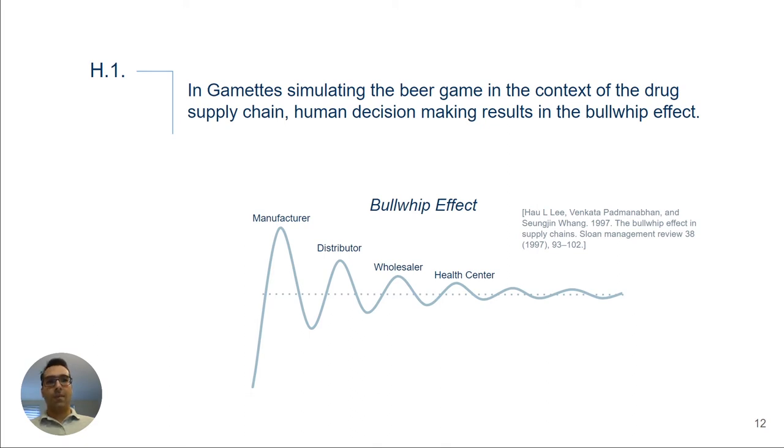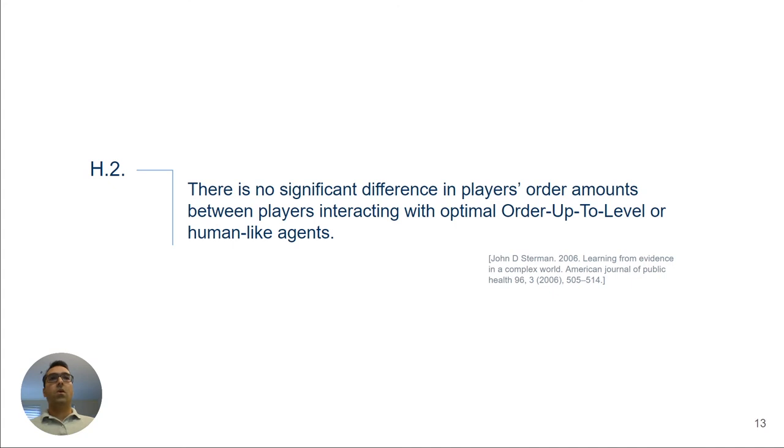Previous studies also showed that this bullwhip effect is caused by judgmental biases that not only ordinary people, but also professionals and experts suffer from. As a result, if the bullwhip effect exists, we expect to see similar behavior regardless if players interact with rational and optimal or irrational agents as long as the participants are not being informed about different agent types.